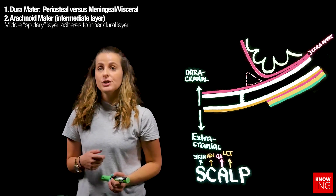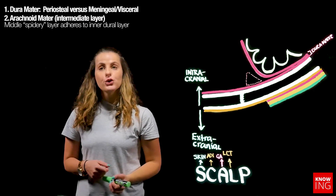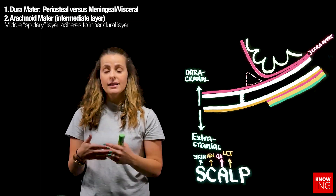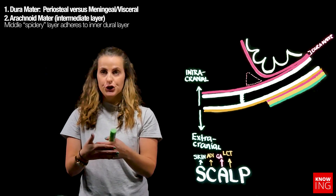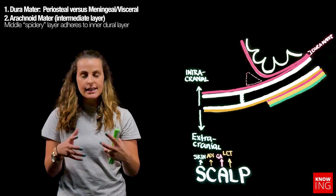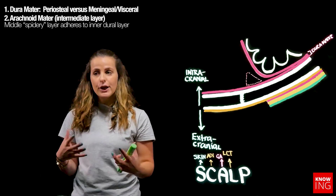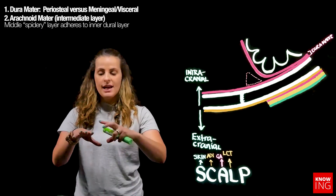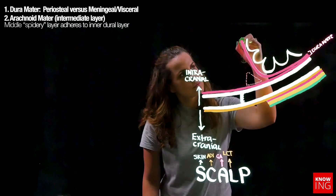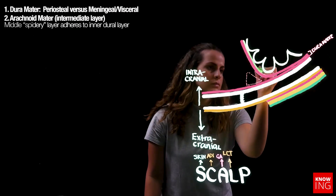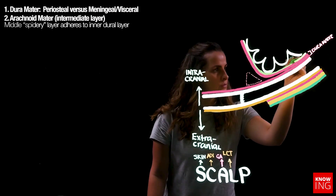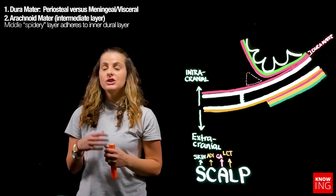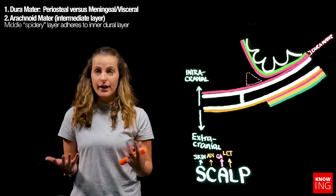The second meningeal layer is the arachnoid mater, which lies deep to the dura mater but is continuous — lining like cling wrap against the visceral layer of the dura mater. As the name implies, if you think of a spider or a spider's web, the arachnoid mater is an entanglement of fibres that encloses the cerebral cortex. Just deep to the arachnoid mater is a real space referred to as the subarachnoid space.